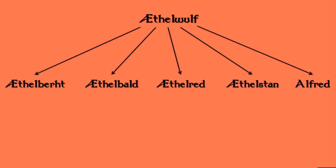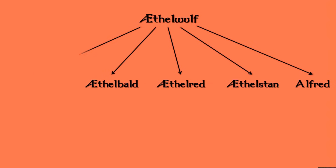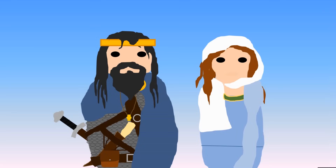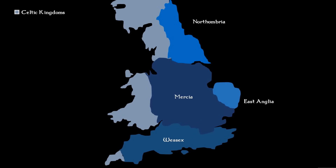Æthelwulf had a lot of sons, but I want to talk about his one daughter. He might have had more that we don't know about. His daughter was called Æthelswith, and she's important because in 853 she married the Mercian king, King Burgred. This led to closer cooperation between the kingdoms of Wessex and Mercia — away from the hostility that had been the situation under his father Egbert, and towards a closer cooperation.